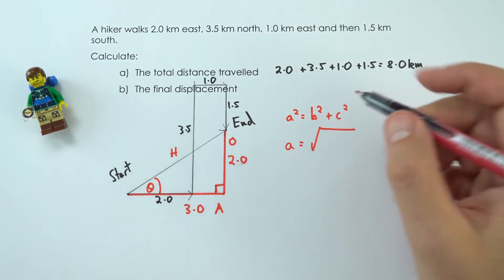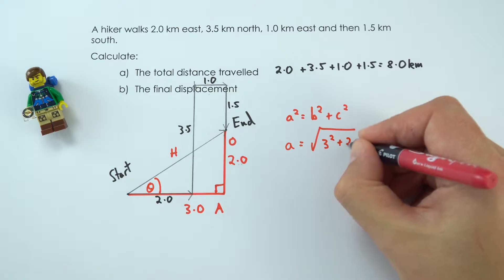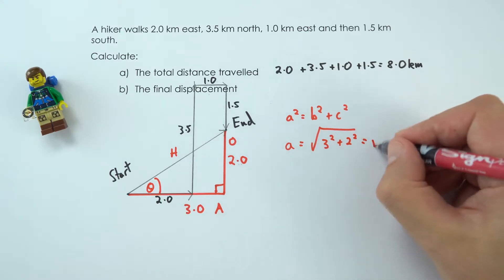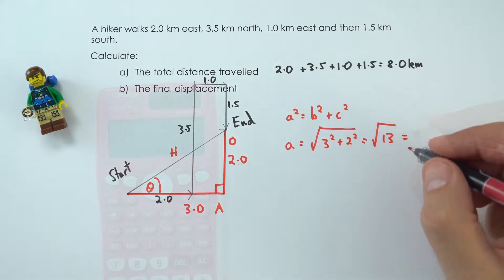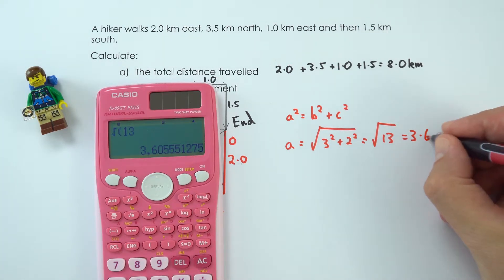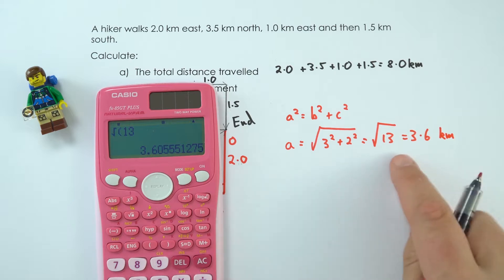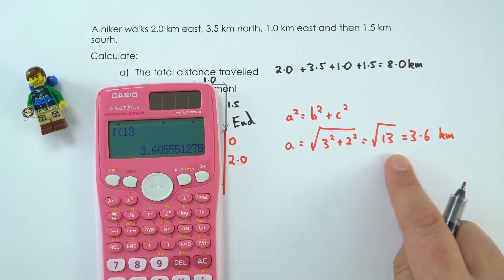Which is the same as the square root of 9 plus 4, which equals 13, and that means that's equal to 3.60 kilometers, which is what we thought it might be when I said it would just be a bit bigger than three and a half.